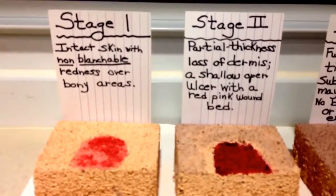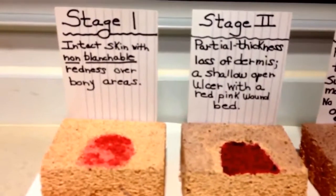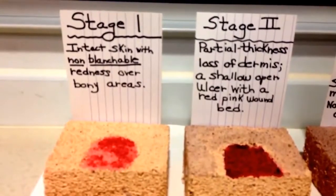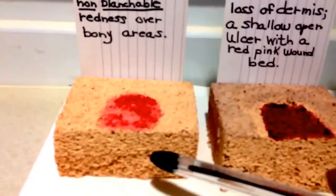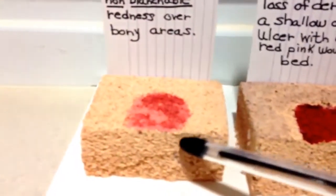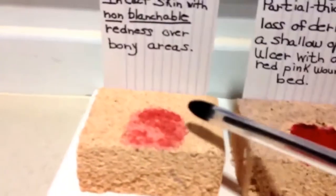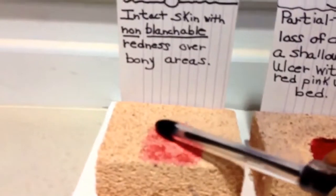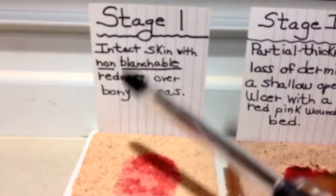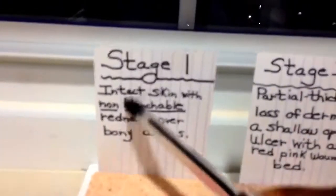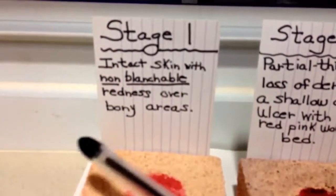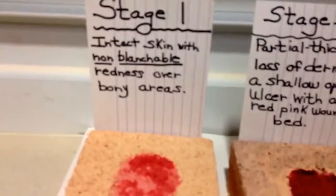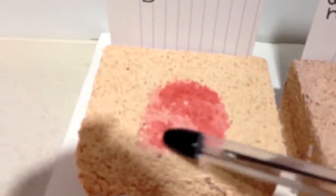There are different stages of wounds as we classify them in medicine. The first stage is stage one. This is a skin — these little boxes are represented by skin, and you can see some redness right over the surface. In order to categorize a stage one wound, it's an intact skin with non-blanchable redness over the bony areas. This area right here is the non-blanchable area.